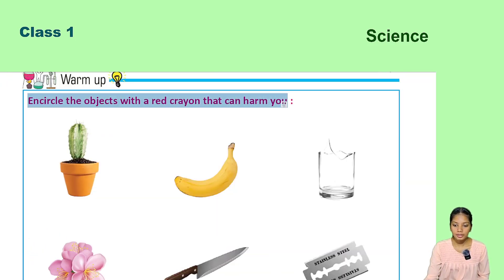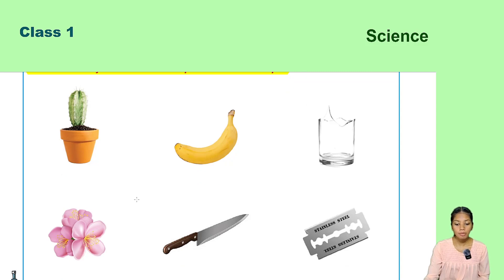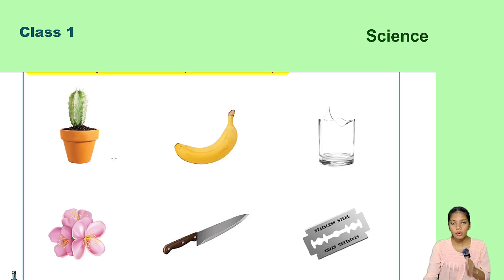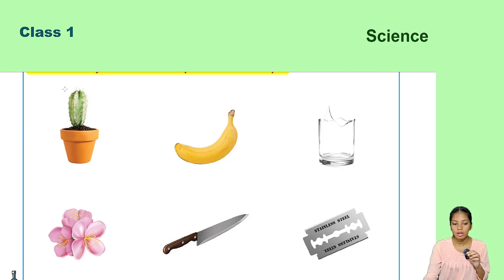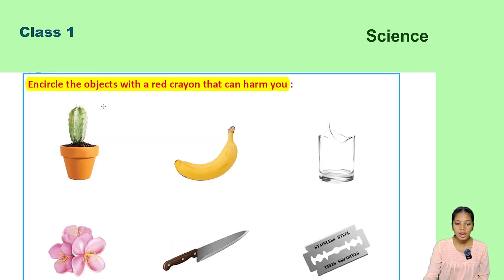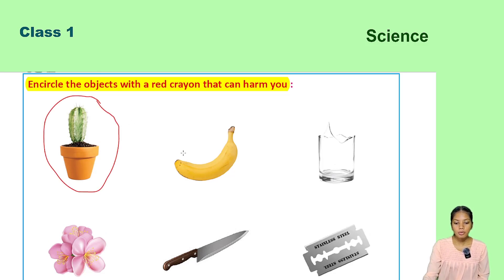Circle the objects with a red crayon that can harm you. We look at images and identify objects that can cause injury. The first object is a cactus plant — it has thorns, so it can harm us. The next object is a banana — it is not harmful to us, so we won't circle it.